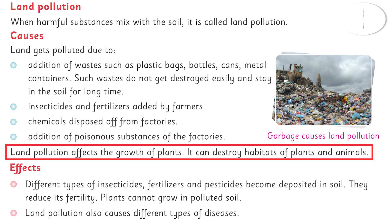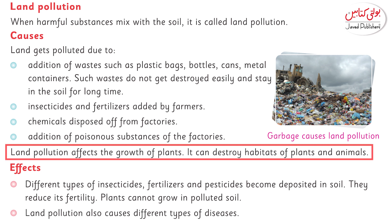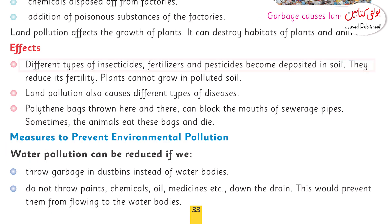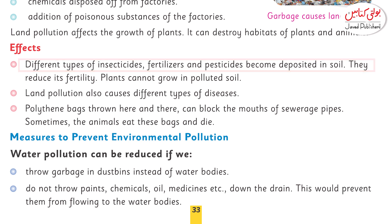How will food be produced? Land pollution can destroy the habitats of plants and animals. Different types of insecticides, fertilizers, and pesticides get deposited in the soil. When we use them, they reduce the soil's fertility and decrease its productivity. Plants cannot grow properly in polluted soil.